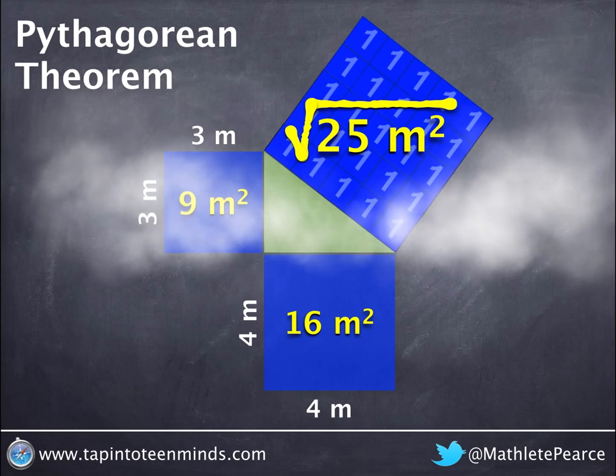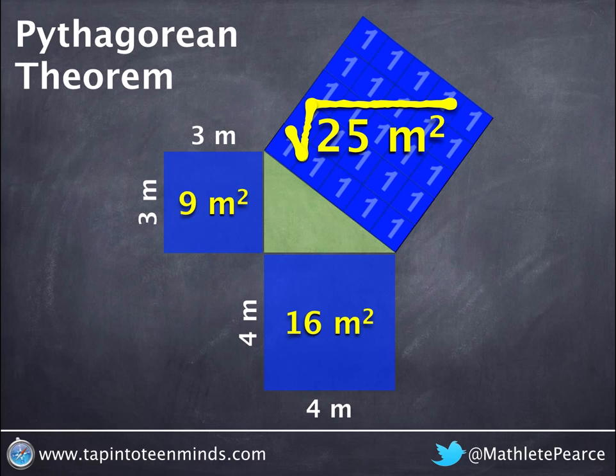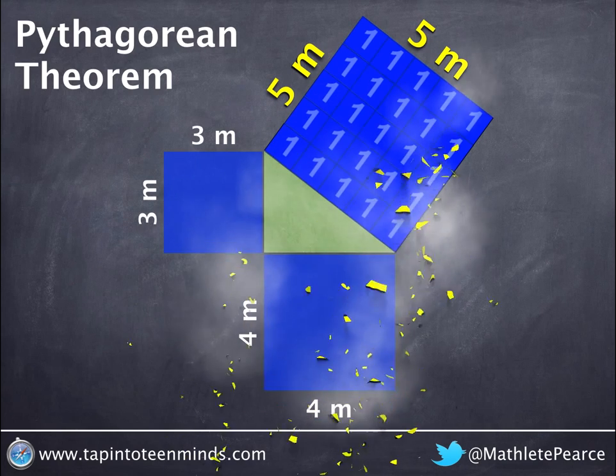To find the side lengths, we square root 25 meters squared, and we find that the dimensions are 5 by 5, and thus the length of the hypotenuse must be 5 meters.